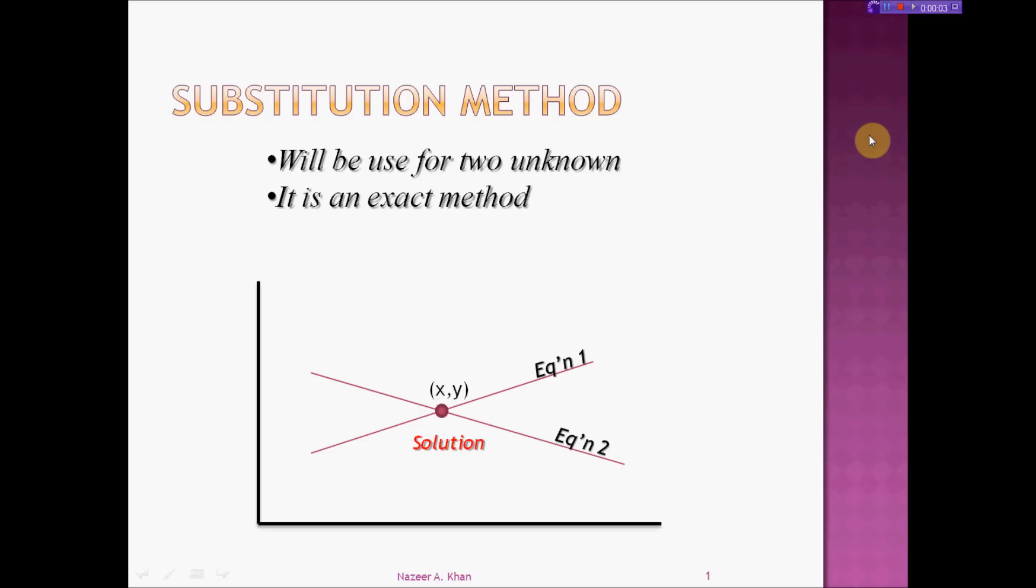Hello, my name is Nazir Khan from the Faculty of Civil Engineering Technology and I will be presenting to you the substitution method. The substitution method is used with two equations and two unknowns. It is also known as an exact method, meaning that you could take those two equations and plot them as two lines.